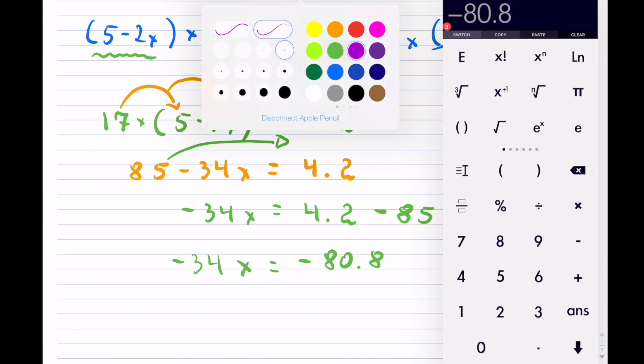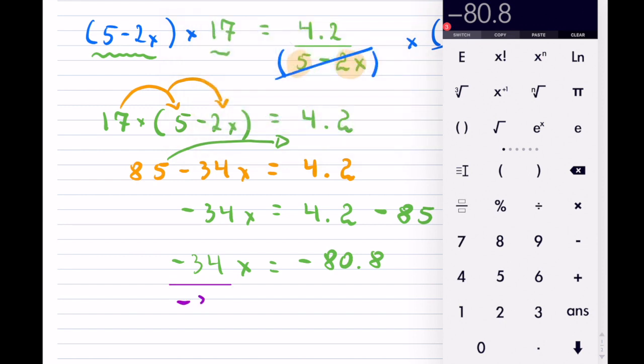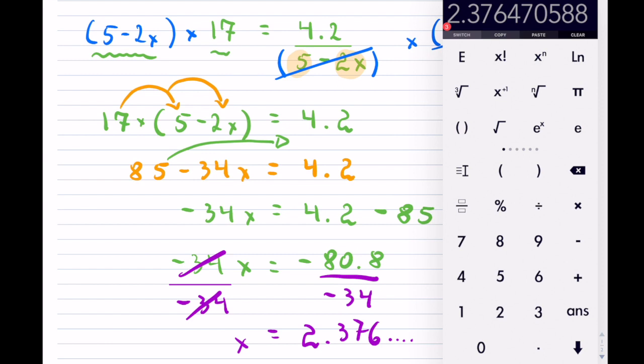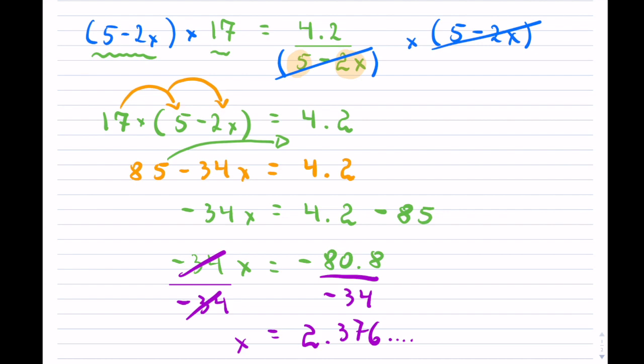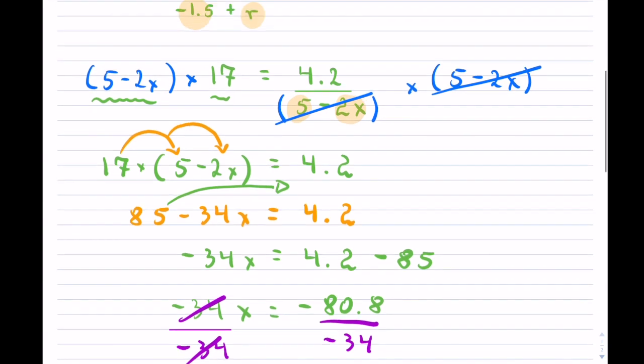So next, we want to get rid of that negative 34, so we're going to do that on both sides, so that's gone. Now I already have that as my answer there waiting, so divided by negative 34. And again, you can round to whatever your teacher asks you to or the question asks you to. I'll just put dot dot dot for all those decimals, and that's how you would solve this particular example. So getting rid of your terms in the denominator is actually not that hard. You have to multiply both sides by them.